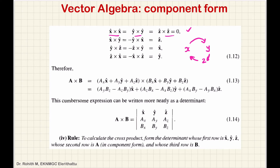So x-cross-y gives z-cap. And y-cross-z gives x-cap. And z-cross-x gives y-cap. This follows the right-hand grip rule, which you can verify.